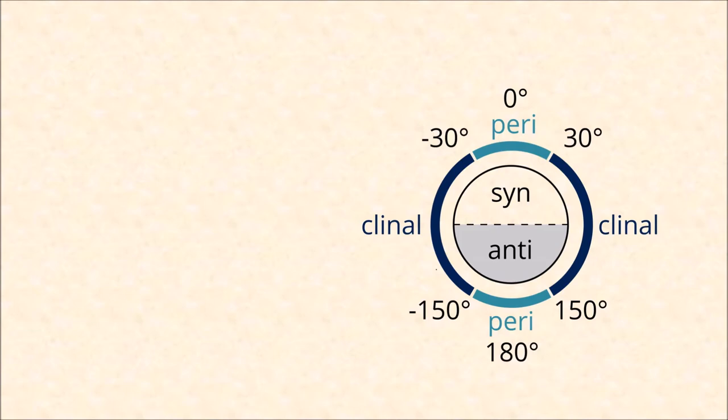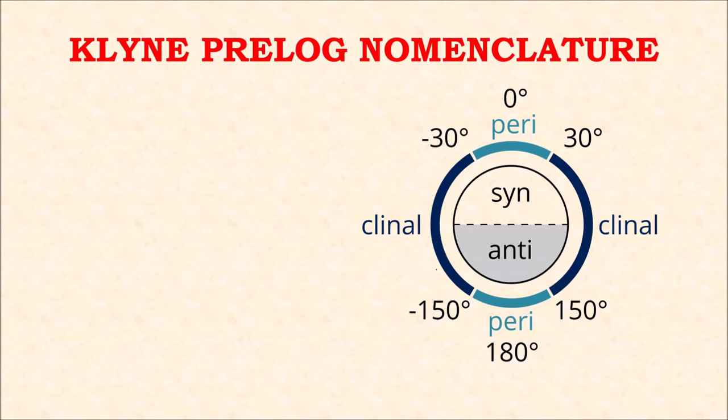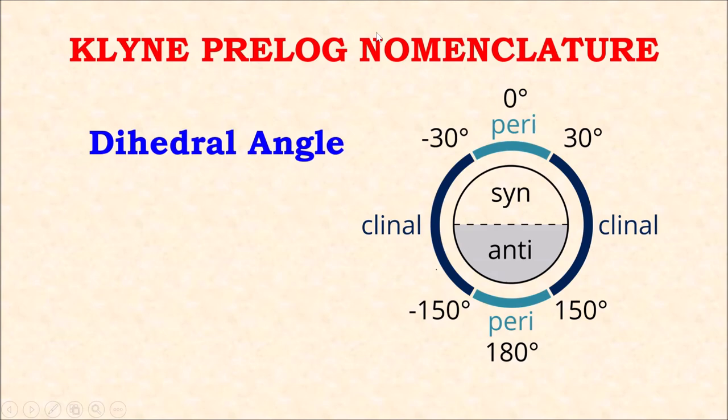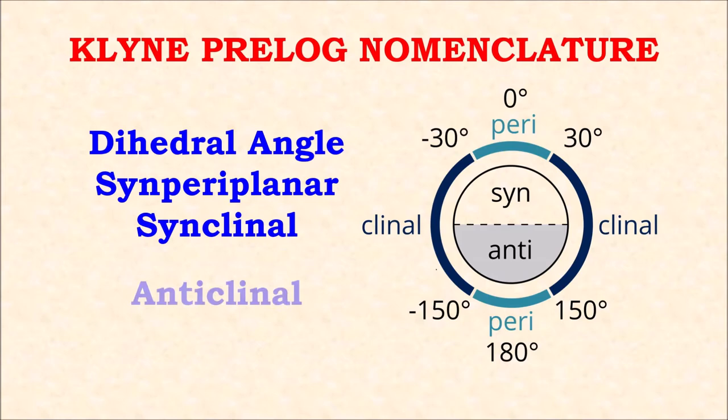Welcome to Chemazon Complete Chemistry. In today's video we are going to learn about an important nomenclature called Klyne-Prelog nomenclature. This nomenclature is important for understanding terminologies in conformation analysis, which is the next topic we will study. We will see what is dihedral angle and understand terminologies like synperiplanar, synclinal, anticlinal, and antiperiplanar.